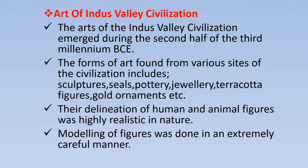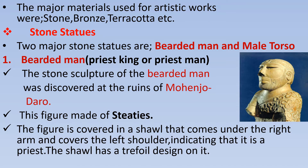The arts of the Indus Valley Civilization emerged during the second half of the third millennium BC. The forms of art found from various sites of the civilization include sculptures, seals, pottery, jewelry, terracotta figures, gold ornaments, etc. Their delineation of humans and animal figures was highly realistic in nature. Modeling of figures was done in an extremely careful manner. The major materials used for artistic works were stones, bronze, terracotta, etc.